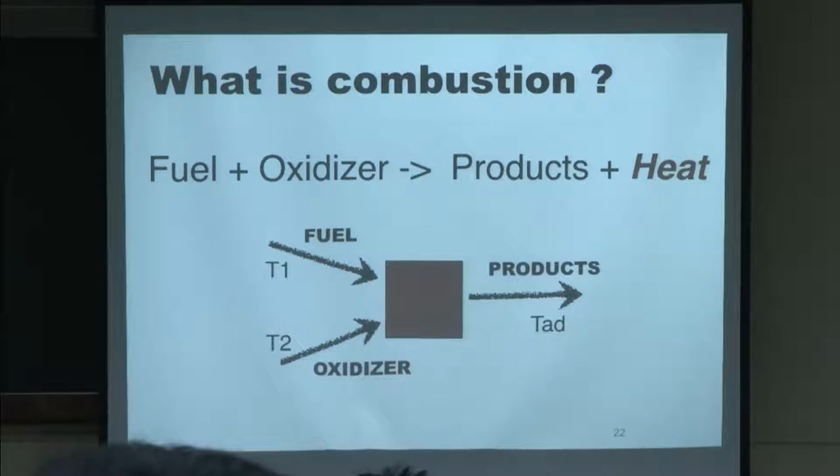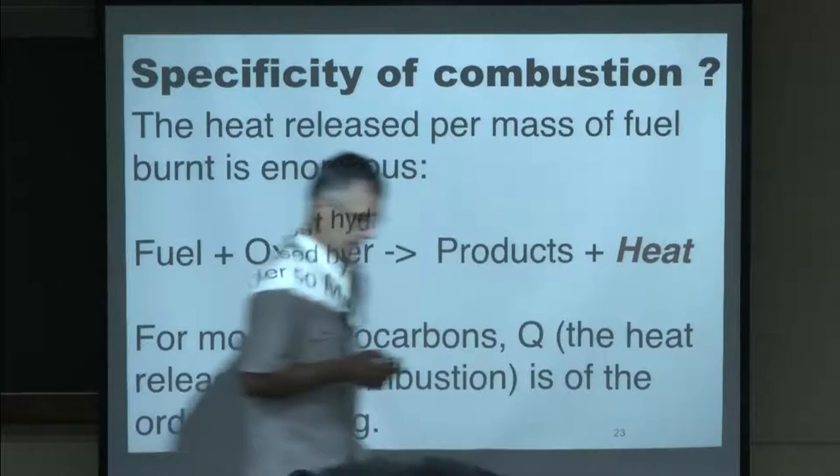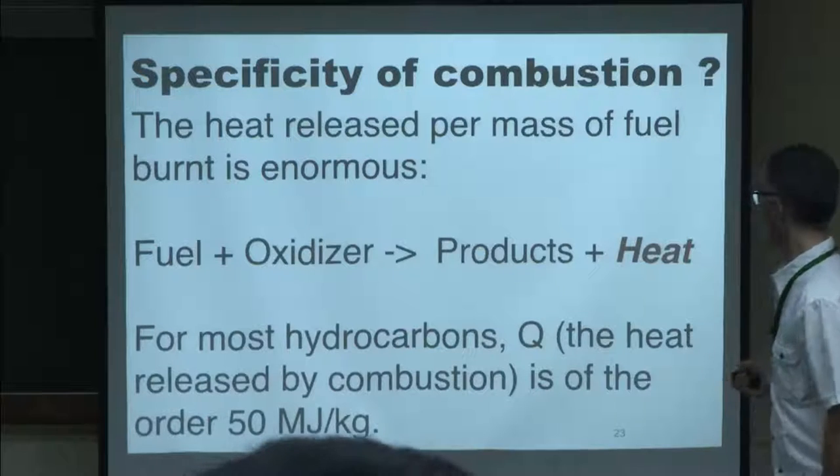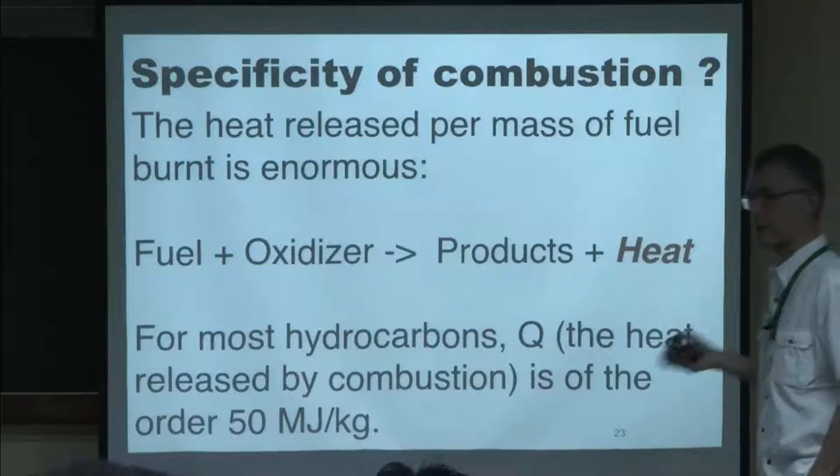The first thing to say about combustion is that the amount of heat released when you burn one kilogram of fuel is enormous — this is why we all do combustion. When this reaction takes place, typically for most hydrocarbons like propane or methane, you release of the order of 50 megajoules per kilogram of fuel. There's just no other way on Earth to do the same thing. This is typically 30 to 50 times more than what you can get from a battery, which explains why in an aircraft it's going to be very difficult to use batteries — you would need a very, very heavy aircraft, which would not take off.